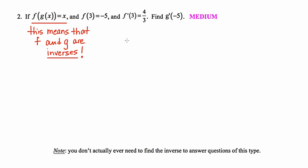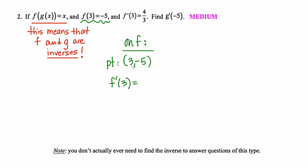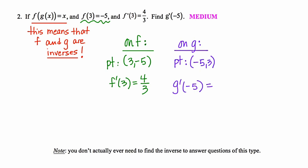I'll do a similar setup to example 1. On f, I have the point 3, negative 5, and the slope of the tangent line at that point is 4 thirds. For the function g: since the functions are inverses, I swap the coordinates, so if 3, negative 5 exists on f, then the point negative 5, 3 exists on g. My objective is to find g prime of negative 5 — the slope of the tangent to g at negative 5 — which is the reciprocal of 4 thirds, so the answer is 3 fourths.